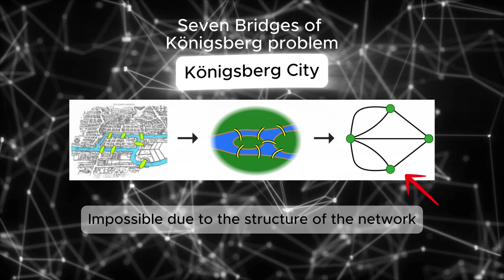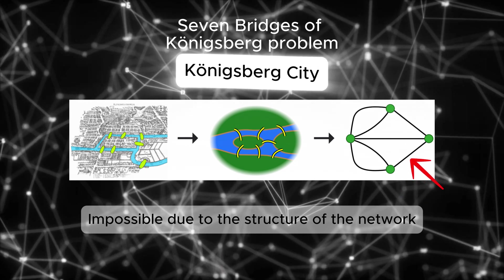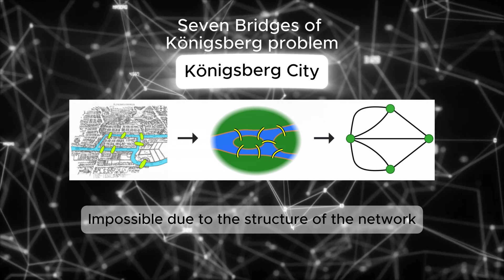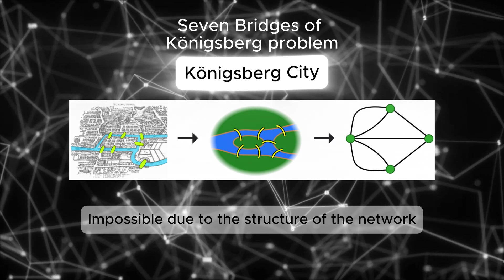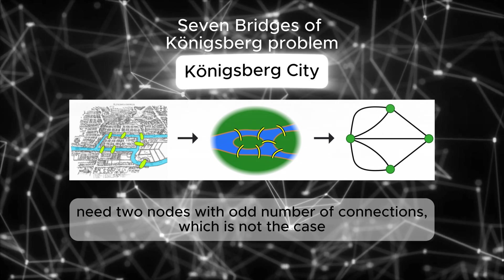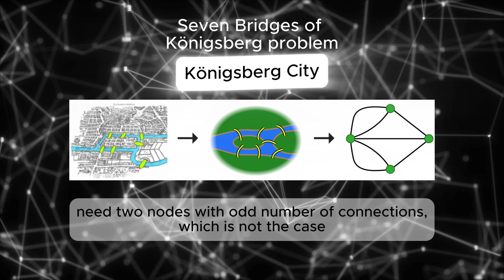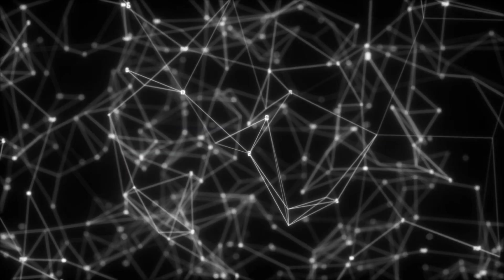Euler's key insight was to represent the problem as a network, with the landmasses as nodes and the bridges as edges connecting them. He discovered the solution depended on the number of edges connected to each node. For a walk like this to be possible, there can be at most two nodes with an odd number of connections, which was not the case for Königsberg. Fast forward to the 20th century,